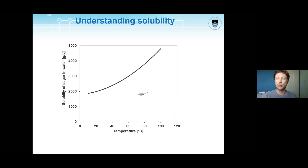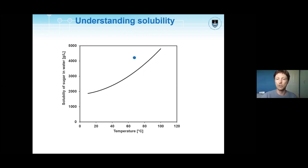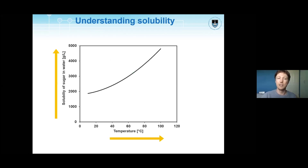Under the curve you have an under-saturated solution, so all the sugar dissolves. On the curve you have a saturated solution, just the right amount dissolves. Above the curve you have a super-saturated solution, and the difference between the curve and that point is the amount of solid left over. As we increase temperature, the solubility of sugar increases.